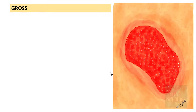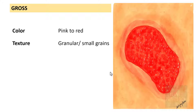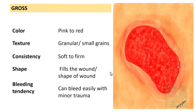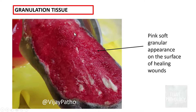On gross examination, granulation tissue has a pink to red color. As the name suggests, it has a granular appearance — it looks as if you see small grains of tissue. It is soft in consistency, fills the shape of the wound, and the granulation tissue takes the shape of the wound — it is never above the level of the wound surface. It can bleed easily even with minor trauma. This is the pink granular appearance on the surface of healing wounds.